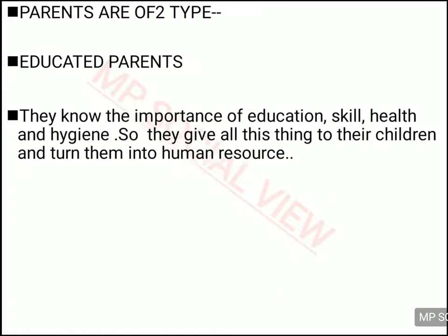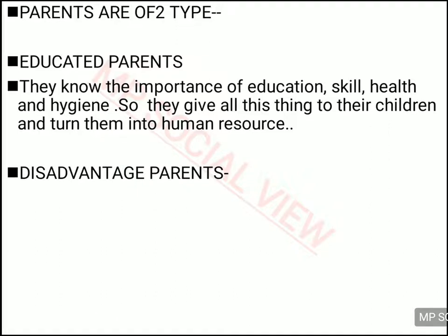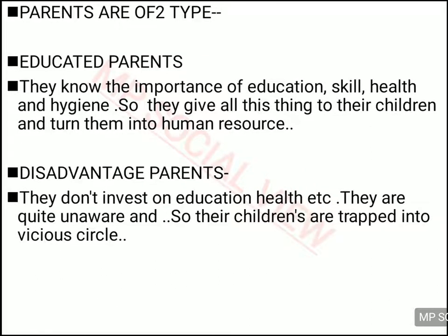Now let us see about parents and their types. There are basically two types of parents: educated parents and disadvantaged parents. Educated parents are those who understand the importance of education, health, skill development, and hygiene, and they invest on their children in their childhood, turning their children into human resource. On the other hand, disadvantaged parents don't realize the importance of education and health — either they don't have the money to invest on their children, or they don't find it important. And because of that, their children cannot turn into human resource.